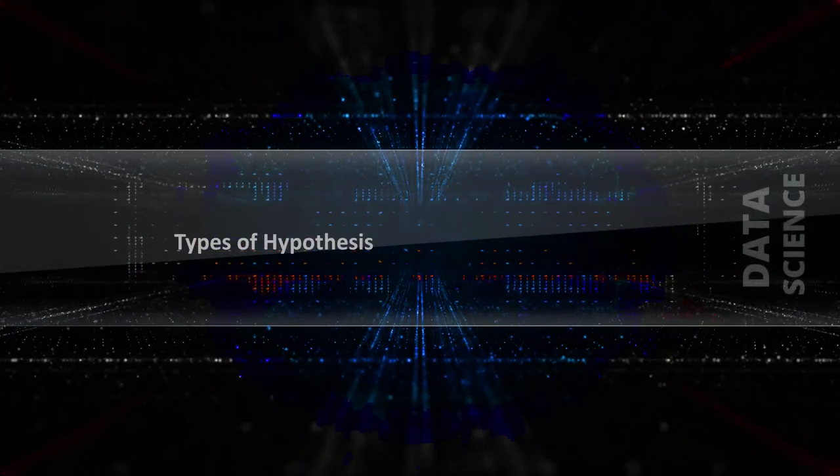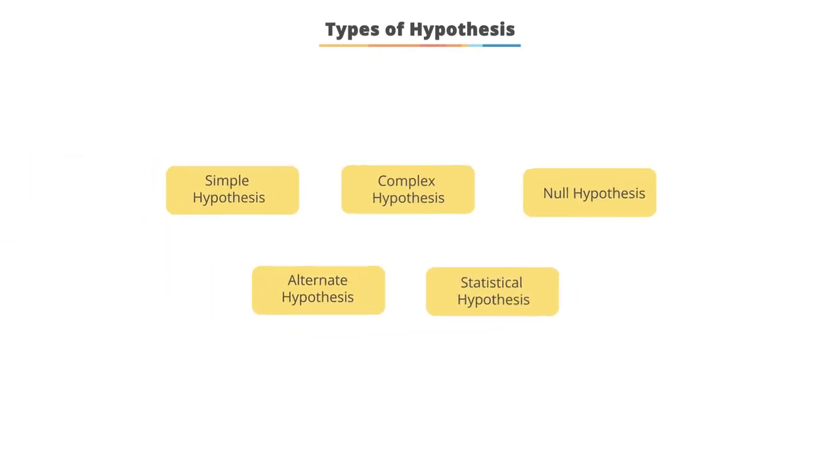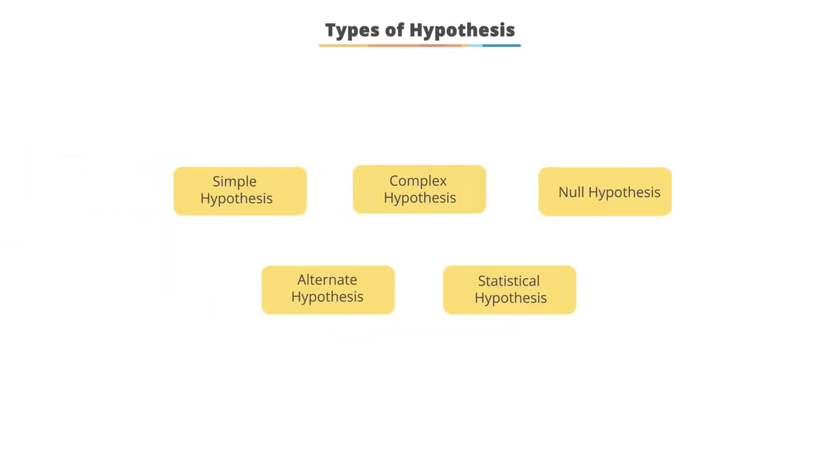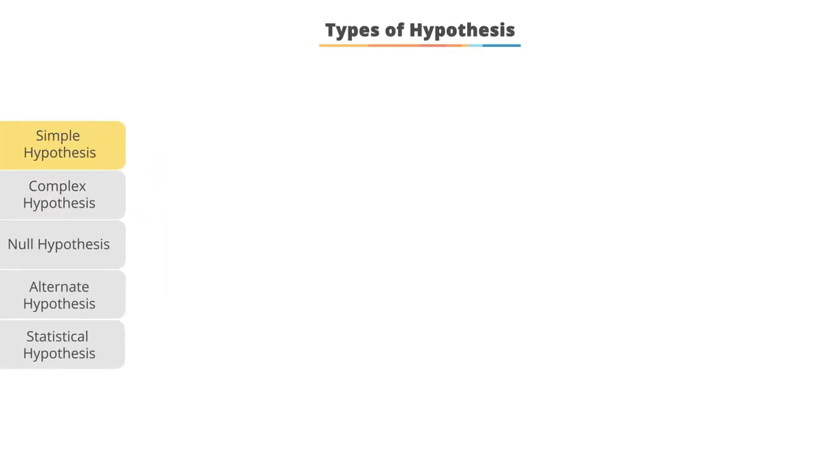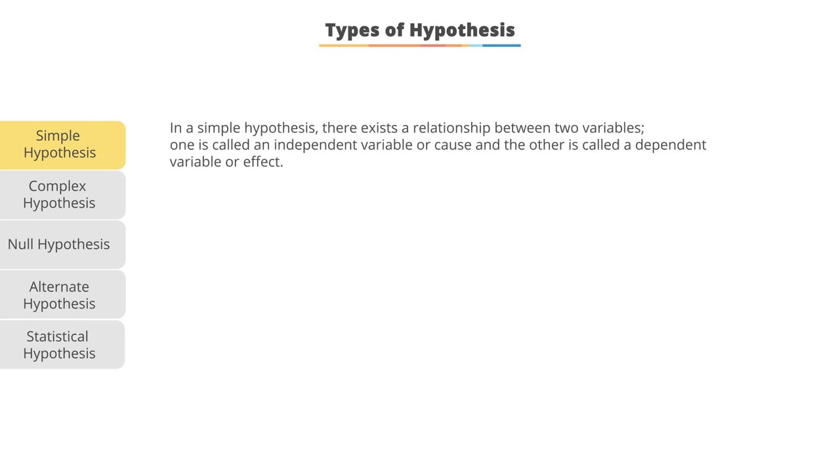Types of hypothesis. Now there's different types of hypothesis. A simple hypothesis says there exists a relationship between two variables, a dependent and independent variable. Now an independent variable is something that causes or impacts another.